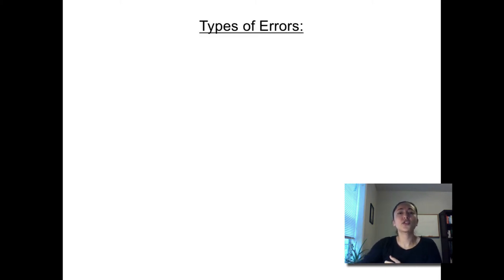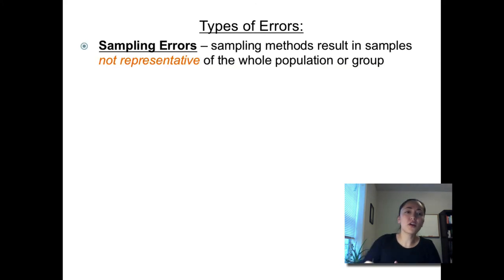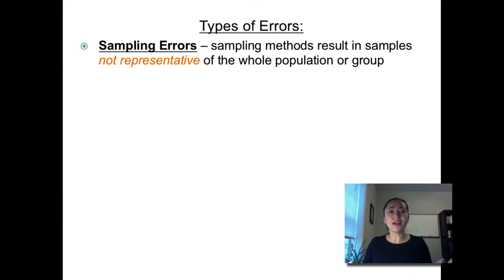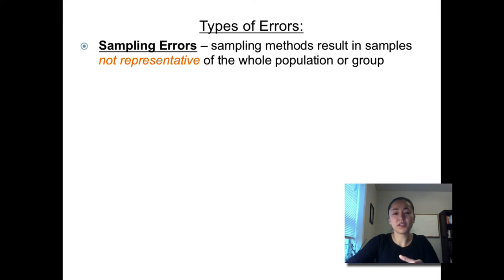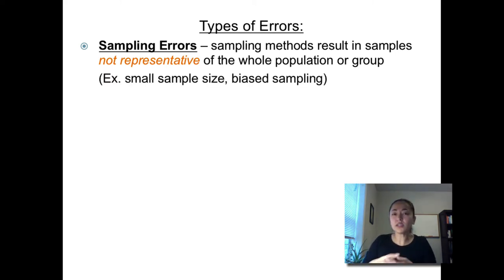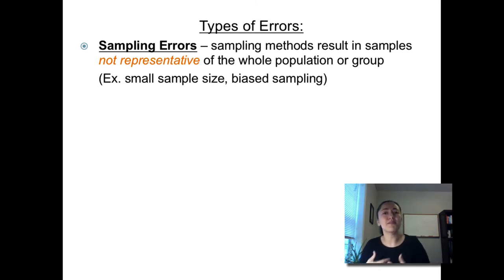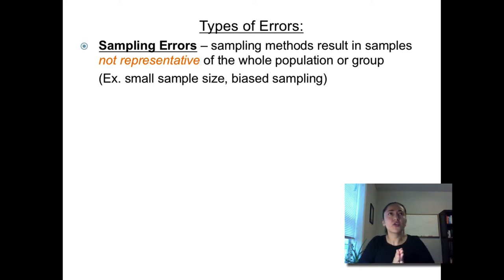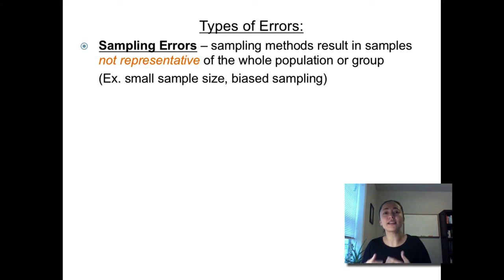The next objective asks us to distinguish between experimental and sampling errors. There are two types of errors typically made when doing a scientific experiment. Sampling errors are sampling methods that result in samples that are not representative of the whole population or group. One thing that can lead to a sampling error is having too small a sample size — if you only take out a few individuals from the population, there's a good chance they don't actually represent the population as a whole. Another thing that can lead to a sampling error is biased sampling — you aren't picking individuals randomly. For example, if you're measuring the height of students on campus and you only measure the height of students on the basketball team, that's biased sampling.